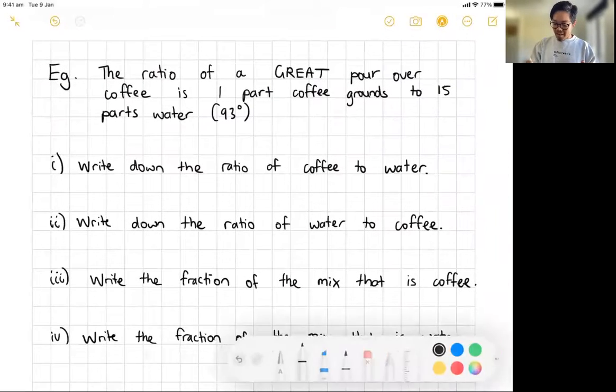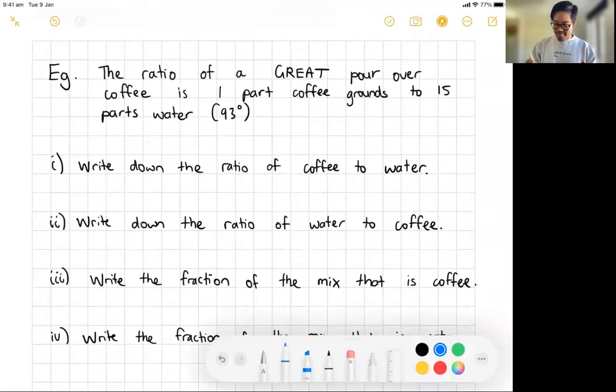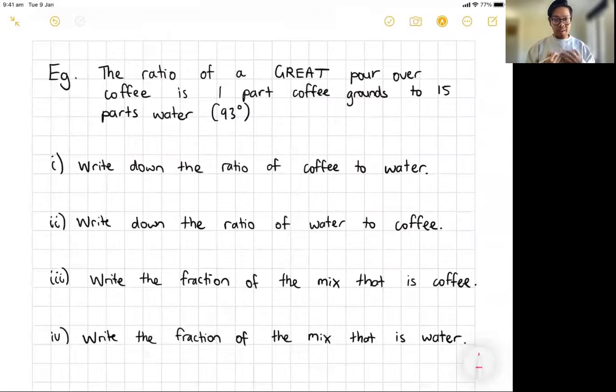Okay. So here's four questions that I have designed on, yeah, coffee, because I like coffee. So I'm going to say here, the ratio of a great pour over coffee is one part coffee grounds to 15 parts water. And if you're taking notes, the water has to be 93 degrees. Okay. Now, the first question that they might ask is, we want to write down the ratio of coffee to water. So here we can see that I need one part coffee grounds and 15 parts water. So to write down the ratio of coffee to water, notice how it says coffee to water. That's my hint there. So I have one part coffee, I'm going to do those two dots and then I'm going to have 15 parts water. So that would be one to 15. Is that making sense? Hopefully.